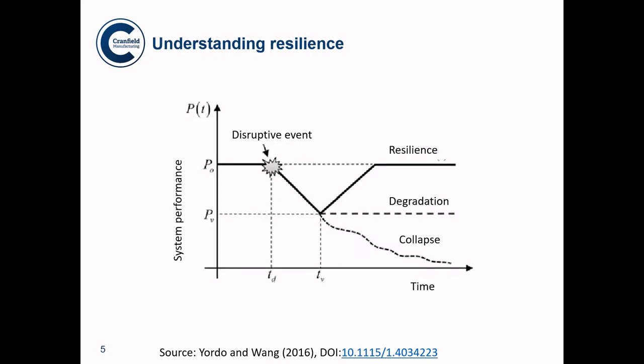In the time between the disruptive event and the recovered steady state, there are different ways to look at the system — whether we want to understand degradation or the collapse in system performance. Resilience is really about understanding what the desired state of performance is and matching activities to respond to that disruptive event. We need to look at these different scenarios and map the efforts required to sustain the system performance we'd like to achieve.